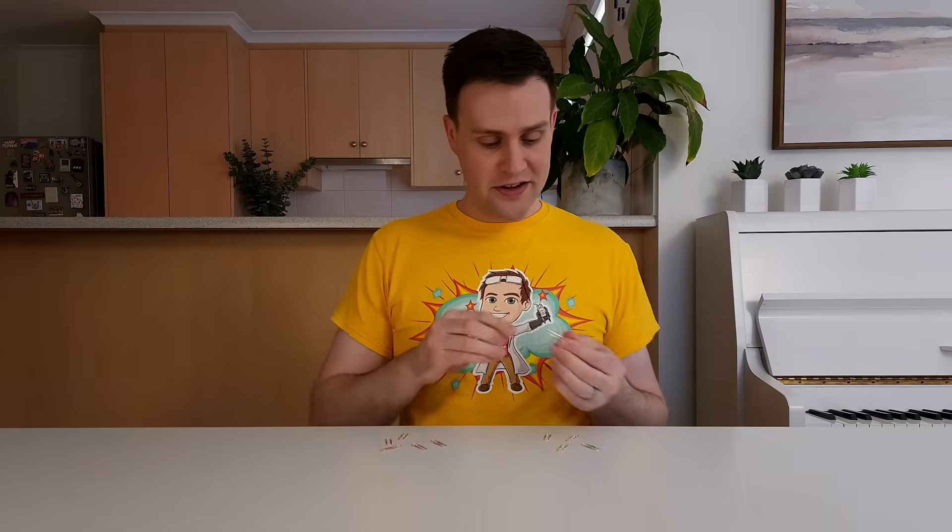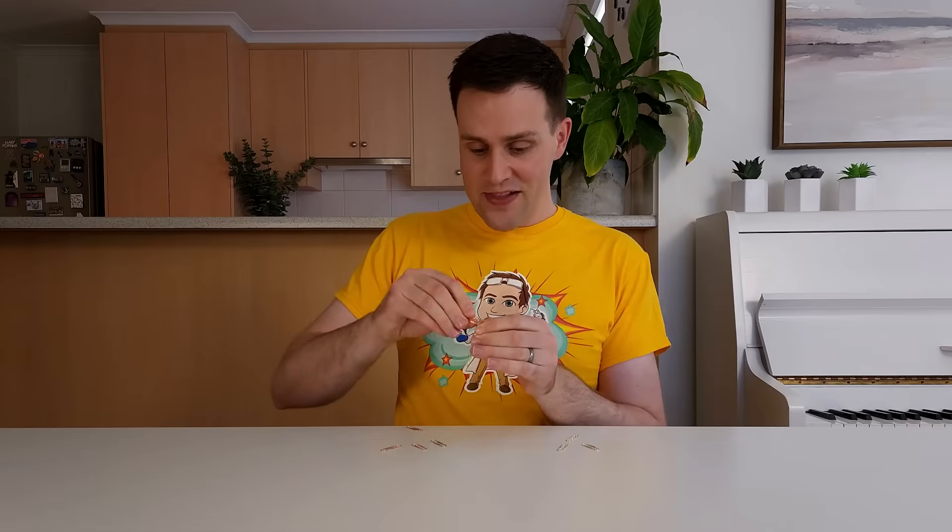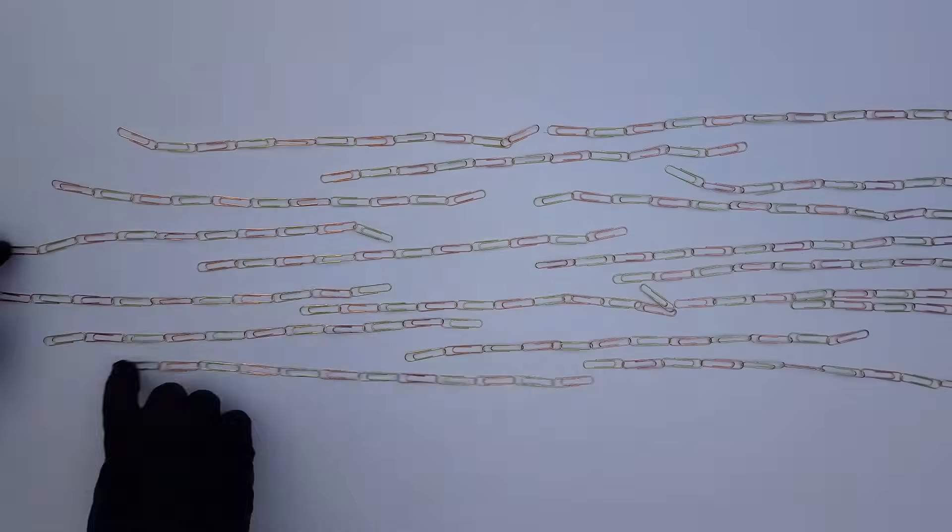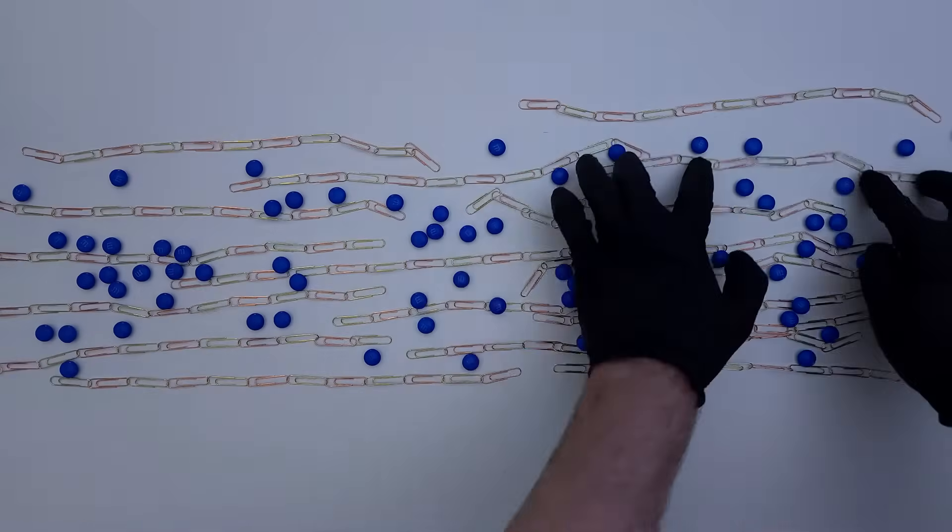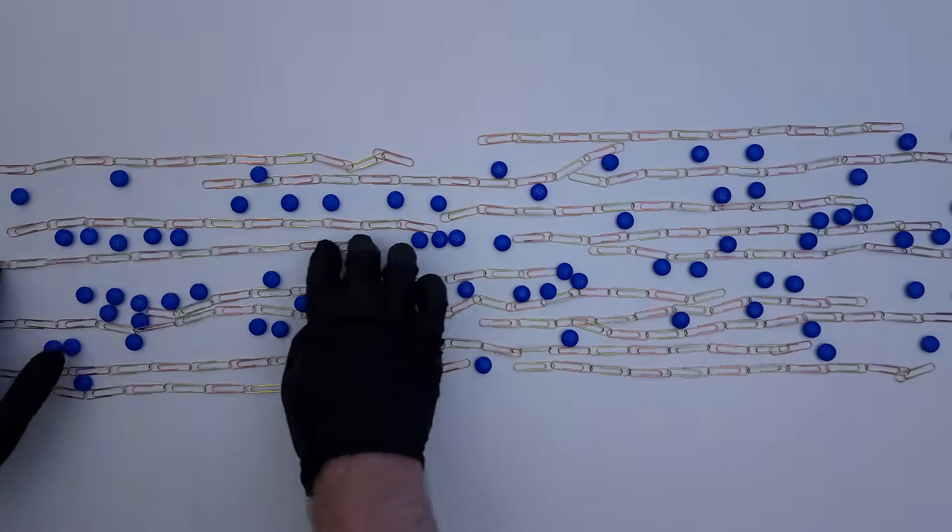So what's happening? Alginate is a polymer. It's a long chain of smaller building blocks all joined together, kind of like these paper clips. The solution of sodium alginate has lots of these chains floating around in water. The chains are negatively charged and don't attach to each other. They move around, and the whole solution is a liquid.